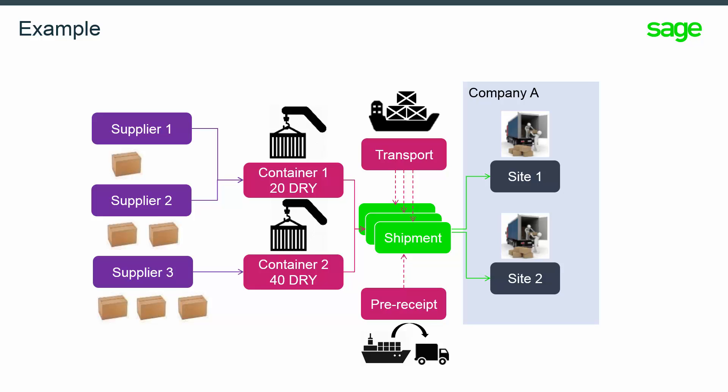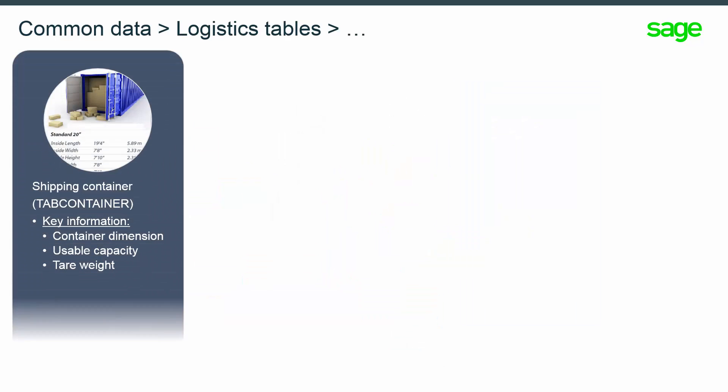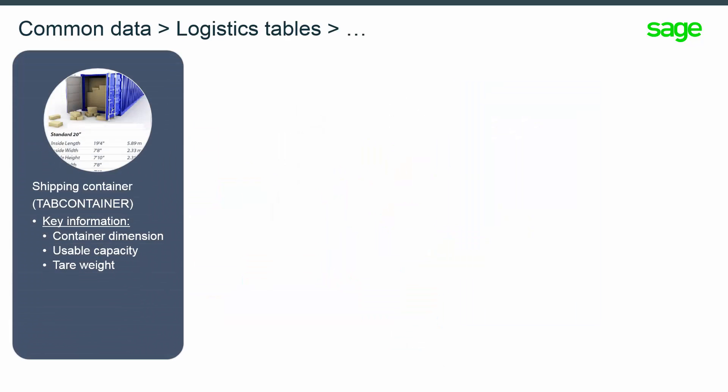The transport function allows you to group several shipments from different companies when they share the same physical transport, hence sharing the same dates and the same destination or arrival places. You must also define the shipment containers function, which enables you to define a shipping container's dimension and capacity.